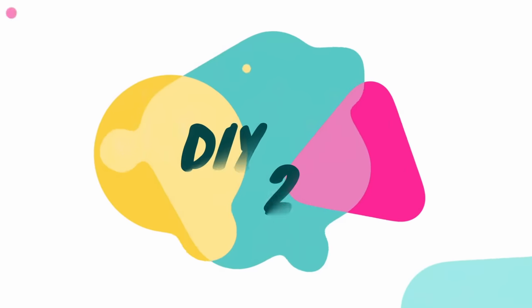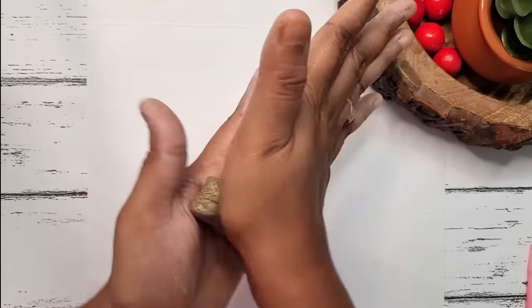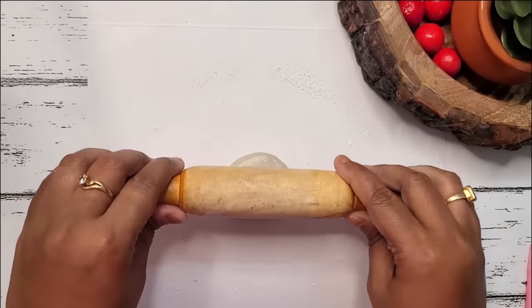Now let's move on to our second DIY. Mixing resin base and hardener together to form air dry clay.